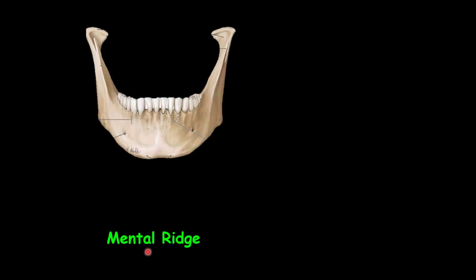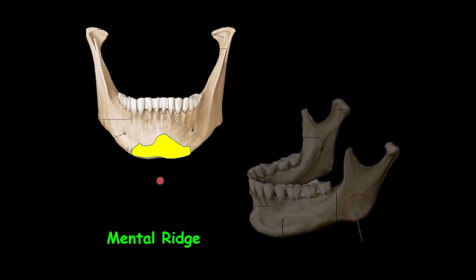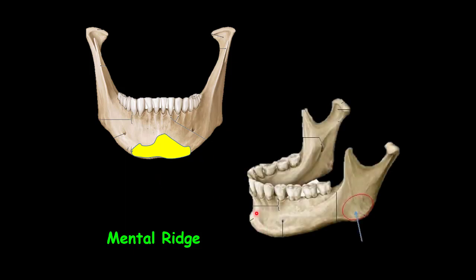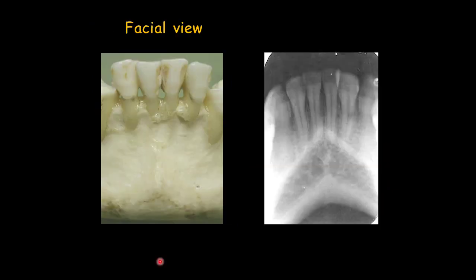The mental ridge, also called the mental protuberance, represents the large bony projection on the buccal aspect of the mandible — you can even touch it on your chin. It is a dense bone. On this view you can also see the mental ridge. Let's see the mental ridge closer on the facial view of the mandible.